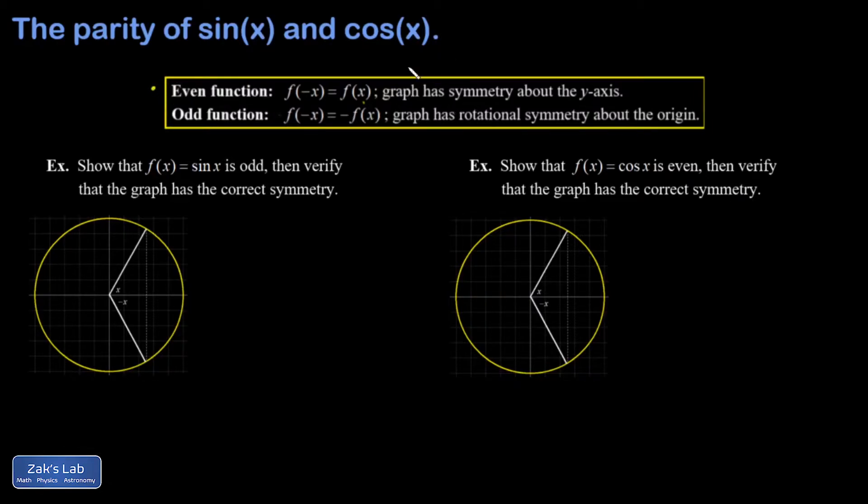An even function has the algebraic property that f(-x) = f(x), and the graph will have symmetry about the y-axis.